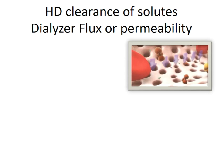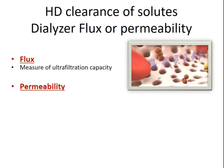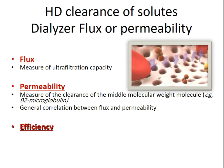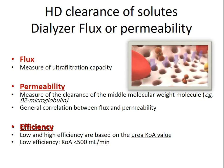When discussing dialyzer flux and permeability, there are some overlapping definitions. Flux is a measure of the ultrafiltration capacity, while permeability is a measure of the clearance of middle molecules such as beta-2 microglobulin. There is a general correlation between flux and permeability. Efficiency depends only on the urea KoA value. Low efficiency has a KoA value below 500 mL/min, while high efficiency has a KoA value above 600 mL/min.